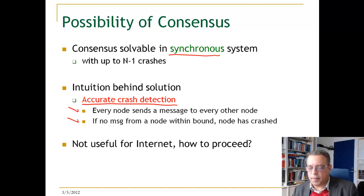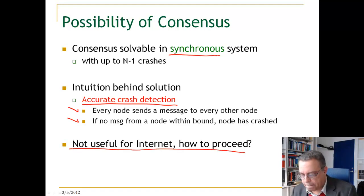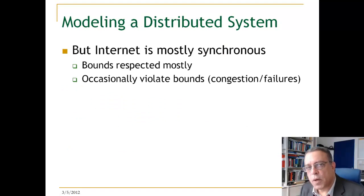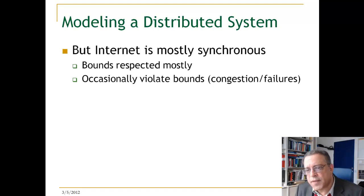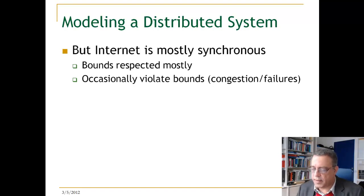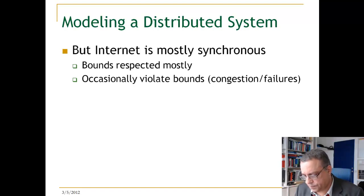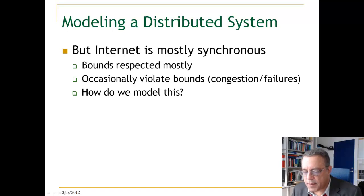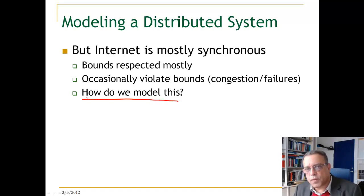Synchronous systems are useful, but not for applications running over the internet. One observation is that the internet, when everything is working fine, is mostly synchronous. We have some idea about the upper bound of how long a message takes to traverse the network. Occasionally these bounds are violated due to congestion or server overload, but most of the time things work fine.